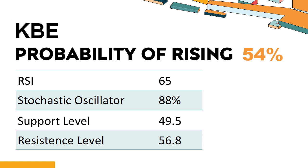Trend Outlook: The probability of KBE's share price rising is 54%. When the probability of rising is higher than 50%, the stock has a higher chance of rising. Combining multiple technical analysis indicators, KBE has six bullish signals and two bearish signals. KBE's short-term support level is 50.7. If it falls below 50.7 during the session, it will have a chance to test 49.5.